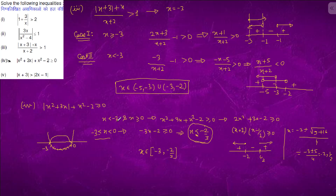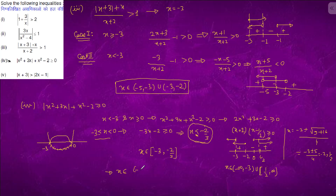We are told x < -3 or x ≥ 0 for this case. Intersection with x ≤ -2 or x ≥ 1/2 gives x < -3 or x ≥ 1/2. Taking the union of both cases, the final solution is x belongs to (-∞, -2/3] ∪ [1/2, ∞). This is the solution.